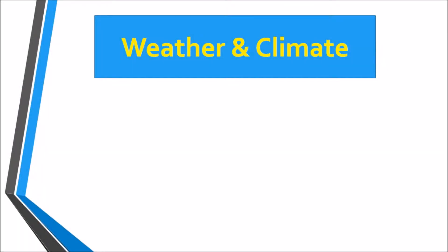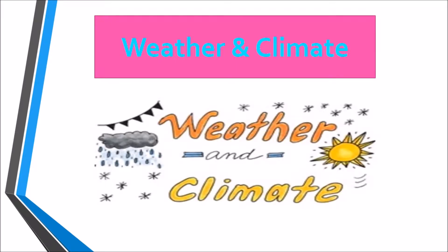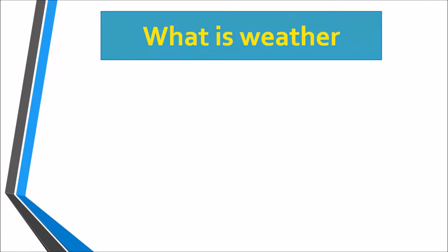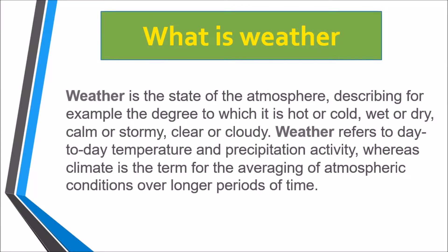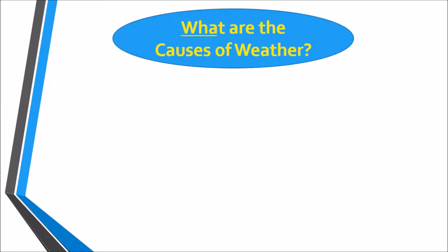Hello students. In this video we will learn about weather and climate. Weather is the state of the atmosphere, describing for example the degree to which it is hot or cold, wet or dry, calm or stormy, clear or cloudy. Weather refers to day-to-day temperature and precipitation activity, whereas climate is the term for the averaging of atmospheric conditions over longer periods of time.